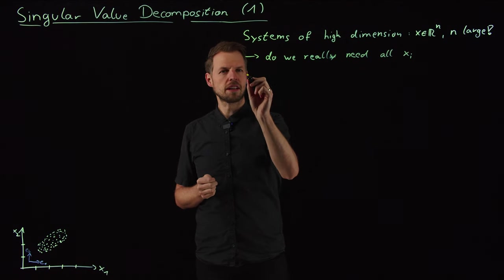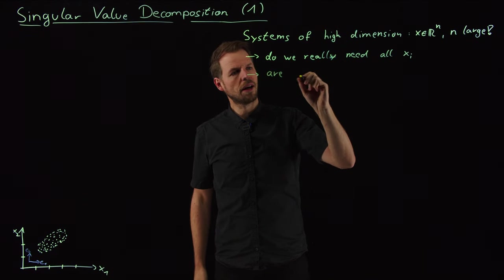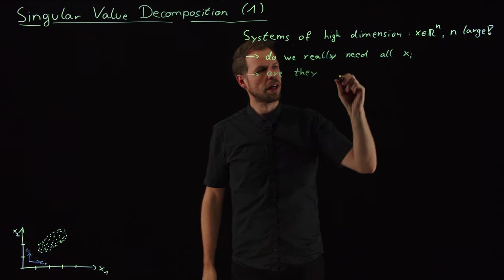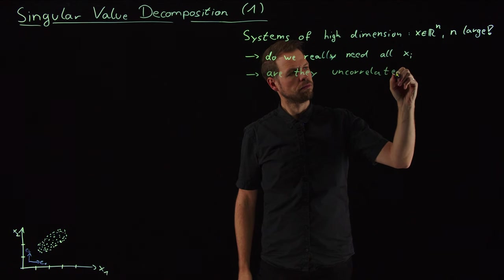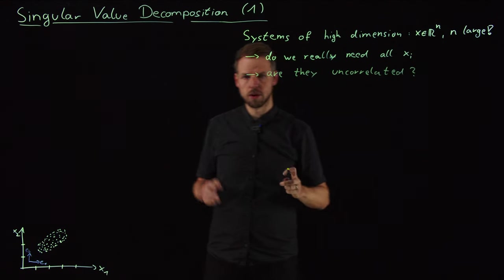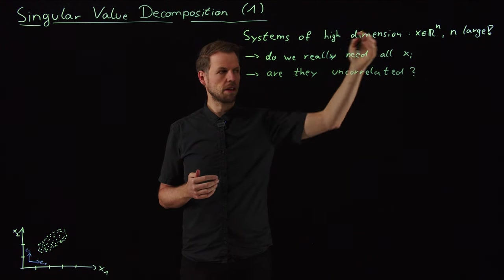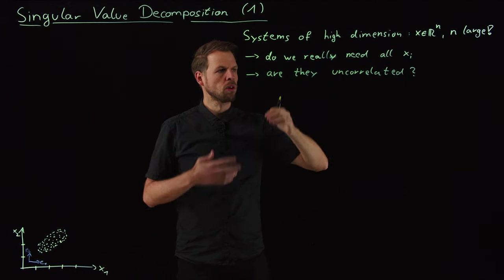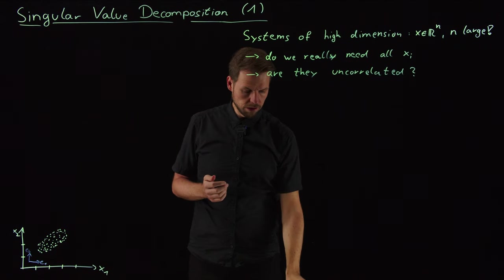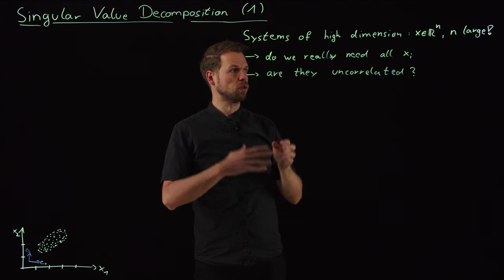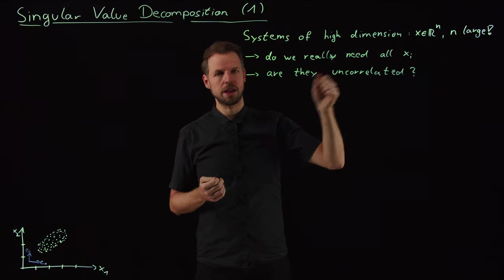And so this is the next question that is really related: are these measurements uncorrelated? So the question is, is there really no relation between two points in my state space, or two components of my state, or are they maybe in a sense related? And so these two questions are the motivating beginning statement to study how to make systems smaller in dimension and find maybe more related states.